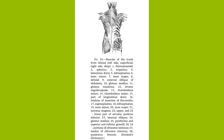The rectus capitis anticus major arises from the third to the sixth cervical vertebrae and is inserted into the occipital bone, serving to flex the head. The scalenus muscles have their origin on the lower cervical vertebrae and are inserted into the first and second rib, thus aiding in the elevation of the ribs as well as in lateral flexion of the neck. The head is held upright by the ligament, which rises from the external occipital protuberance and is inserted into the spinous process of all the cervical vertebrae except the first.